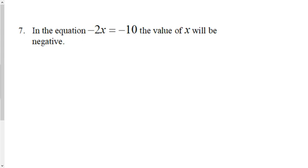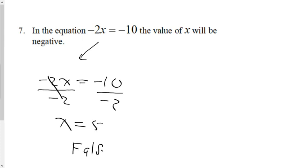Question 7: In the equation -2x = -10, the value of x will be negative. There are two ways to solve it. Obviously we could just isolate the variable and see if the answer is negative, which is x will equal 5, and then I could say false.